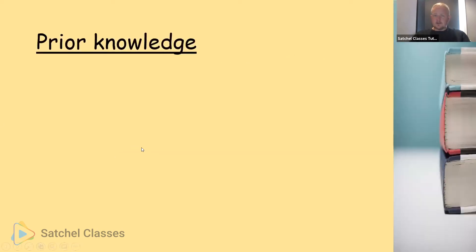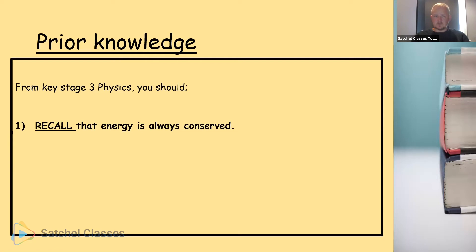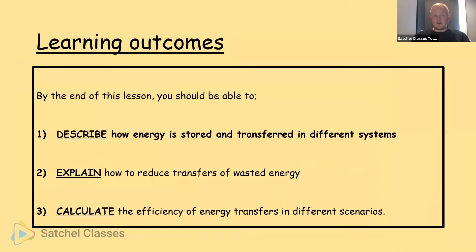Prior knowledge — what you should know from key stage three physics — is that energy is always conserved. You should be able to recall and describe the ways in which energy can be stored and transferred, and recall and describe ways of reducing energy transfers by heating.